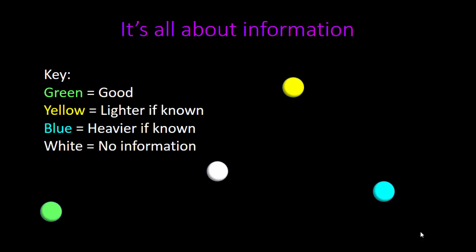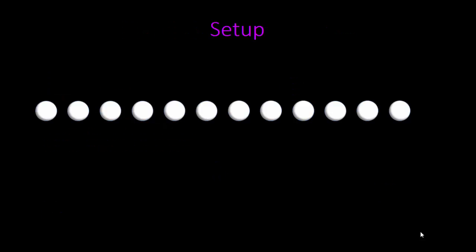White means we have absolutely no information about the weight of the marble. If you're still a little confused about the blue and the yellow, don't worry—they will make more sense as we get farther into the problem. For now, just try to remember the key. To begin, let's talk about the setup.